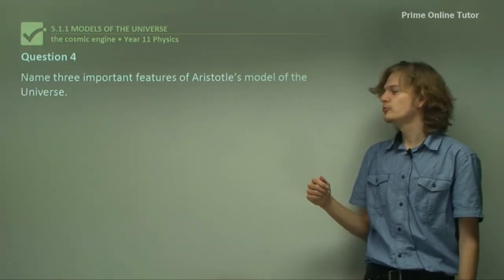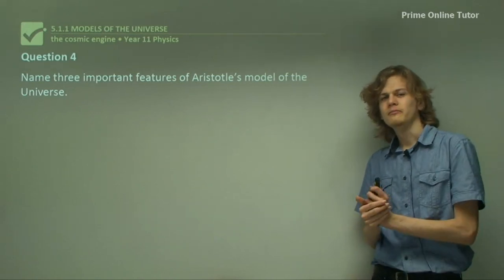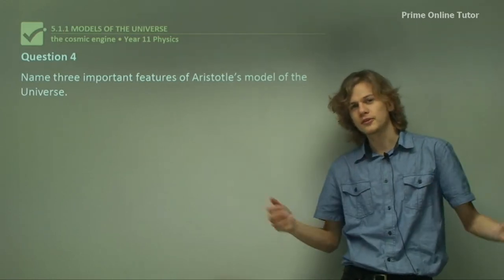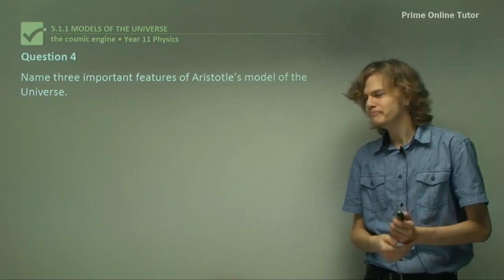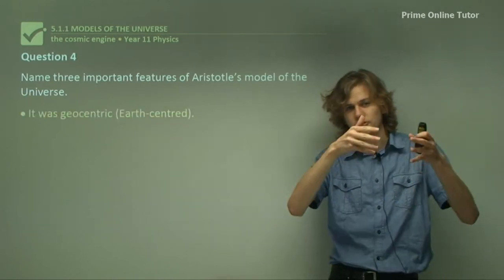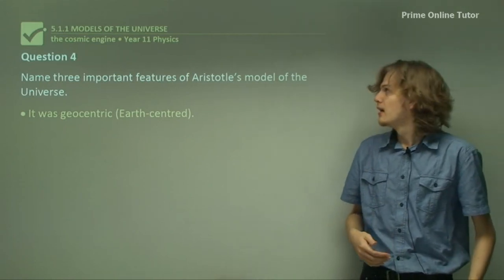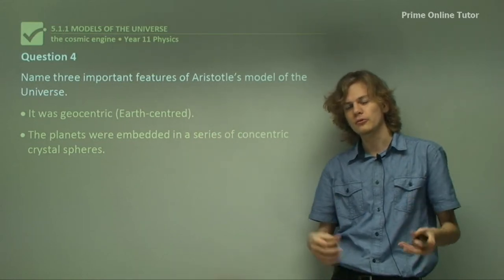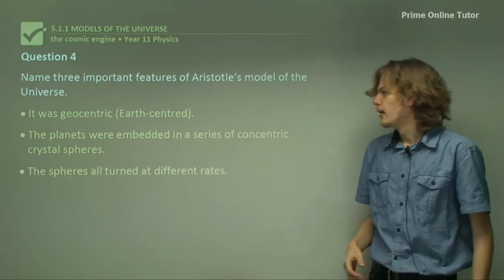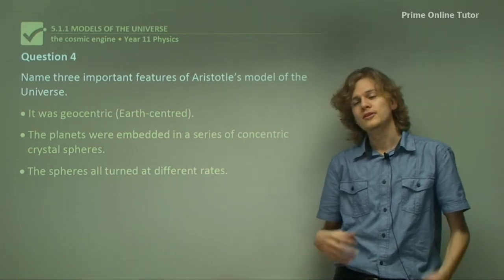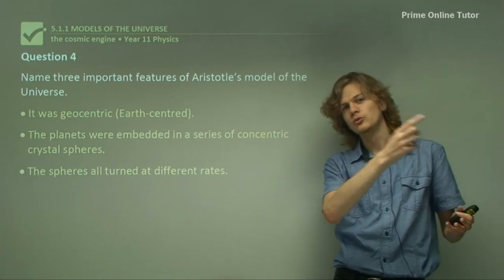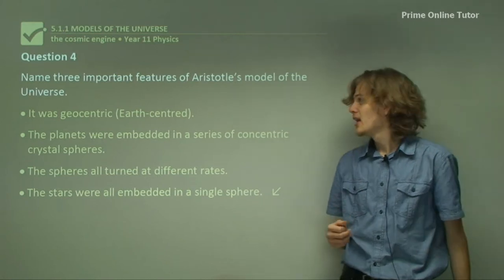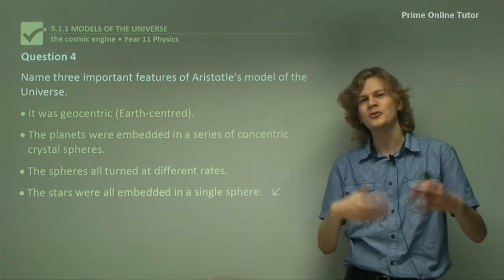Question four. Name three important features of Aristotle's model of the universe. Well, we know fairly well Aristotle's model of the universe now. It's the geocentric one with all the perfect celestial spheres surrounding it. Let's go through some of its features. It was geocentric. It's Earth-centered. The planets were embedded in a series of concentric crystal spheres around the Earth, and so they were perfect and unchanging and eternal. The spheres all turned at different rates, which is how Aristotle explained that the planets moved at different rates across the sky. And the stars were all embedded in a single sphere right at the outer edge.